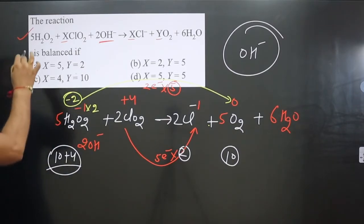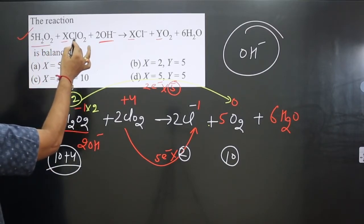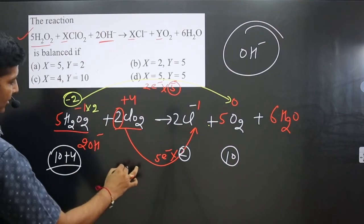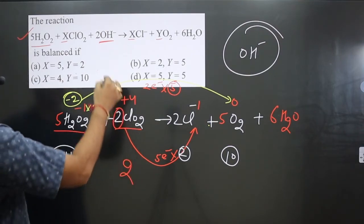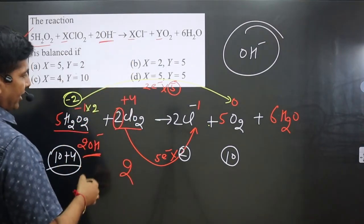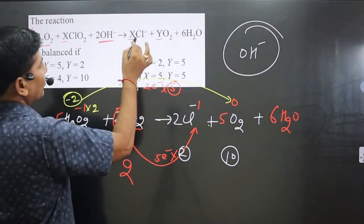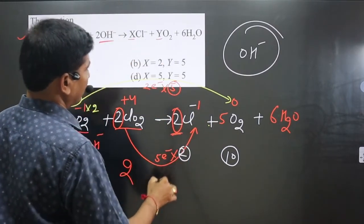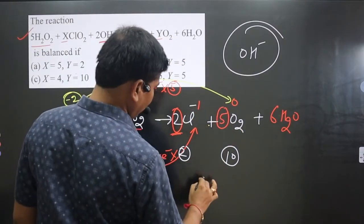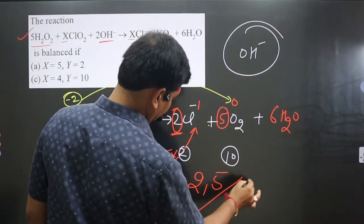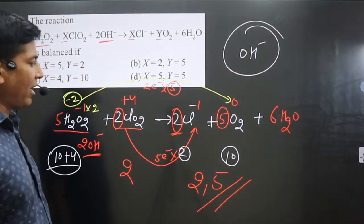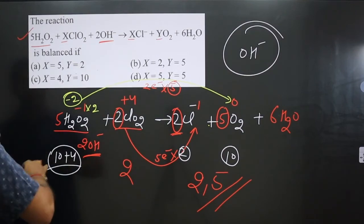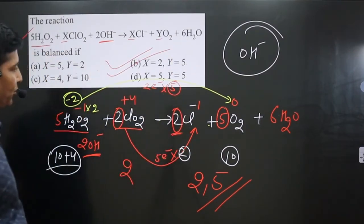Checking the final equation: 6H₂O is correct. We have x·ClO₂, which gives x=2. We have 2OH⁻ on the left side. On the right side: 2Cl⁻ and y·O₂, giving y=5. Two chloride ions and five oxygen molecules. The answer is option B.